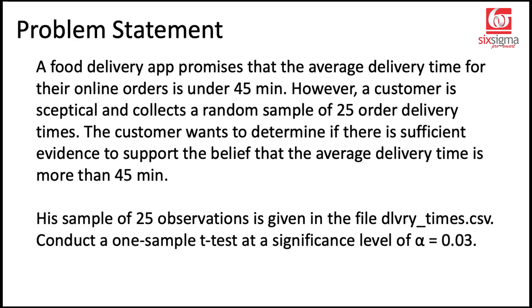So let's proceed with a problem. A food delivery app promises that the average delivery time for their online orders is under 45 minutes. However, a customer is skeptical and collects a random sample of 25 order deliveries. The customer wants to determine if there is sufficient evidence to support the belief that the average delivery time is more than 45 minutes. So the customer is trying to challenge what the company believes to be the truth. The customer claims that it is more than 45 minutes. A sample of 25 observations is given in the file called deliverytimes.csv. So we have the raw data from which we can calculate the sample mean and sample standard deviation and proceed. Conduct a one-sample t-test at a significance level of alpha equals 3%.